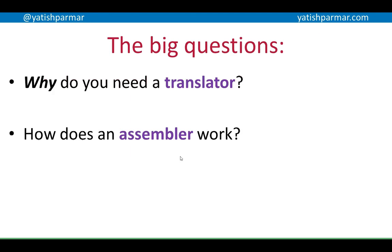So revisiting the big questions: why do you need a translator? Because we write in something easy for us to understand — assembly is a low-level language but more human-readable — and we need to translate that into something a computer can execute. How does an assembler work? It translates the opcodes, the symbolic addresses, and converts the constants. Watch out for the next video, which continues the theme of translators, looking at interpreters and compilers.